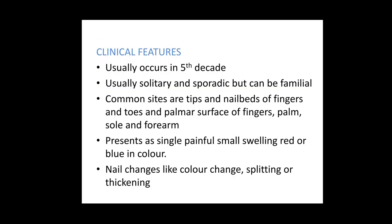Regarding the clinical features of a glomus tumour, it is usually seen in the fifth decade of life. It is usually solitary as well as sporadic, but there have been familial forms. The most common site is the tip of the finger or the nail bed of the fingers and toes. Other common sites include the palmar surface of the fingers, the palms, soles, and the forearm. It usually presents as a single, painful, small swelling, red or blue in colour. In some individuals the swelling may not be clinically palpable, but the pain will be severe. Nail changes may also be seen, like colour change, splitting, fissuring or thickening of the nail.